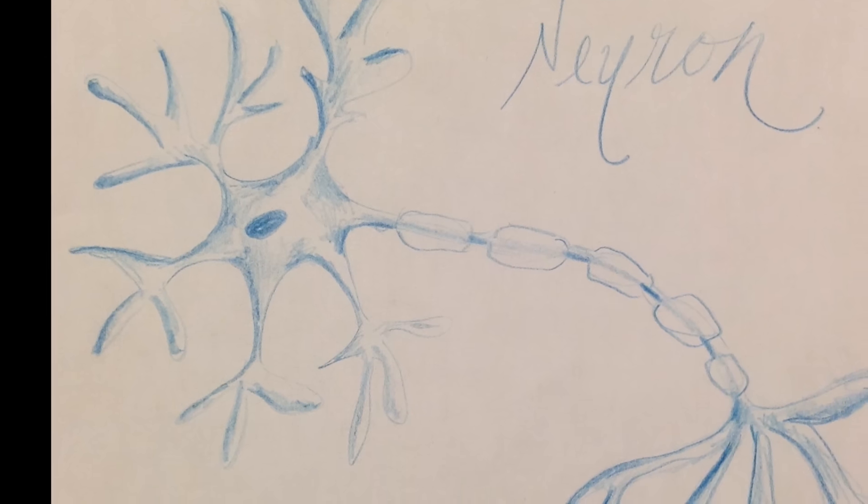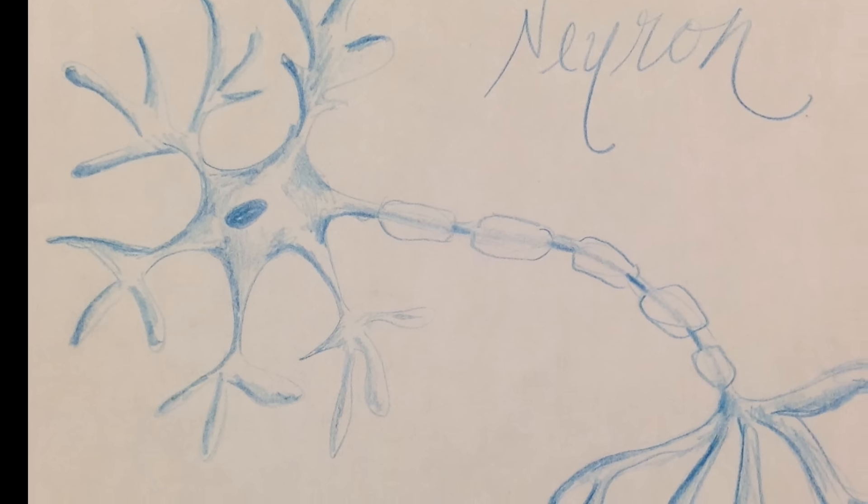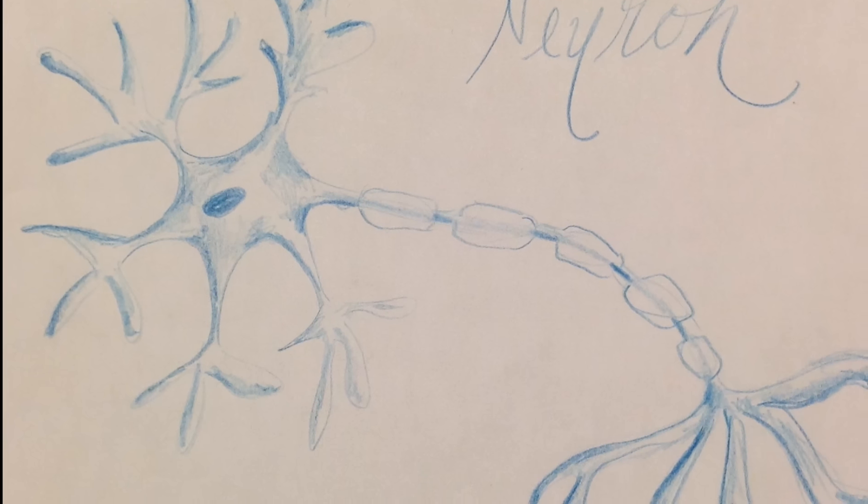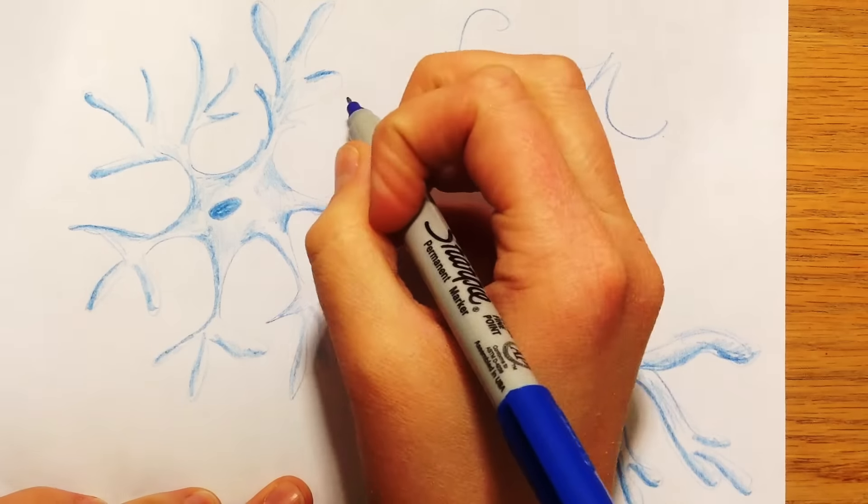We'll begin by reviewing the anatomy of a neuron and where graded action potentials occur. So I'll label the parts of my drawing.